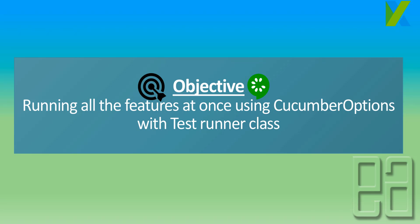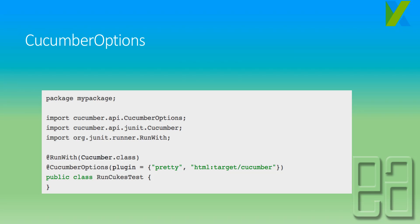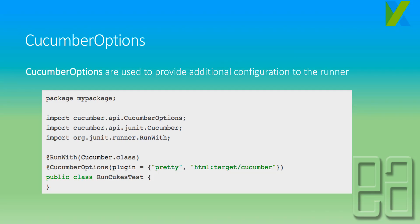The objective of this video is to run all the features at once using Cucumber options with a TestRunner class. We know that we can create a class in Cucumber and add CucumberOptions to specify additional configuration to the runner — for instance, specifying the run-with Cucumber annotation, the pretty HTML plugin targeting a Cucumber options folder, and so on. There are many options available in CucumberOptions that we have already discussed in the Serenity with Cucumber course on the ExitAutomation YouTube channel.